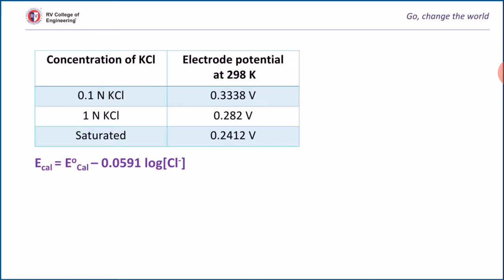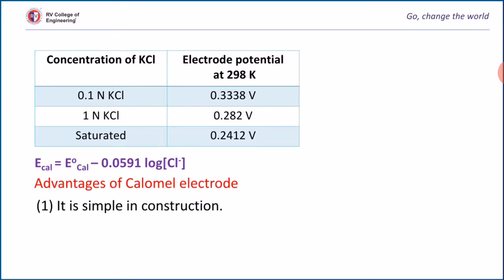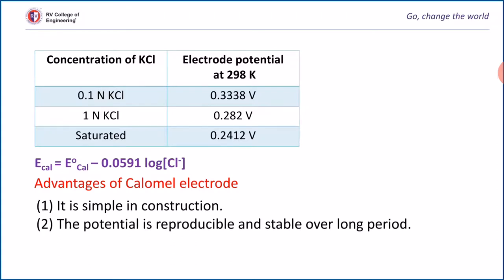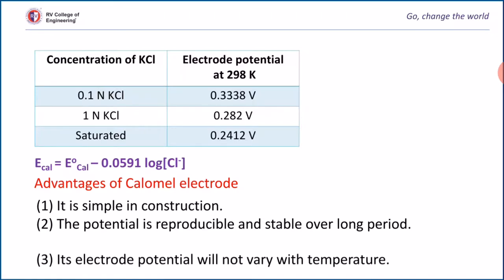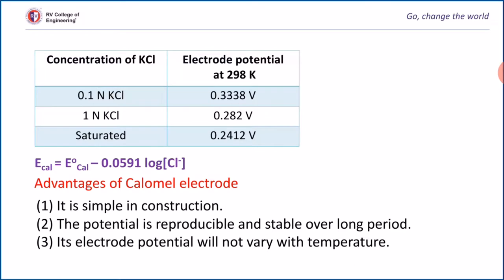Now let us see a few advantages of the calomel electrode. It is simple in construction and easy to use. The potential obtained during the course of experiments is reproducible and stable over a long period of time. The electrode potential does not vary significantly with temperature.